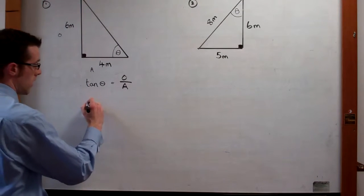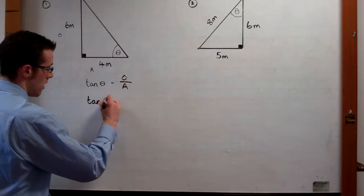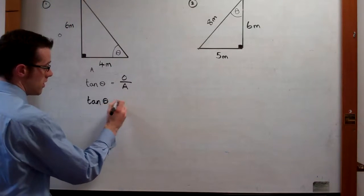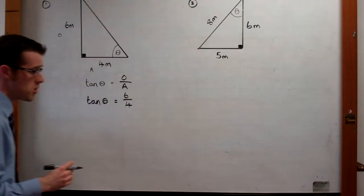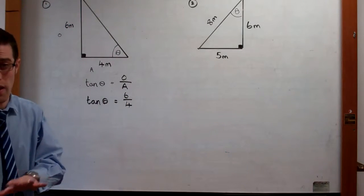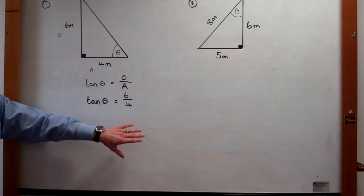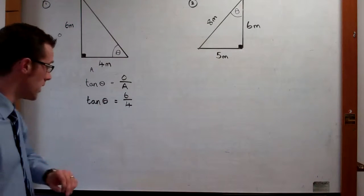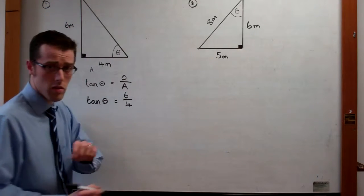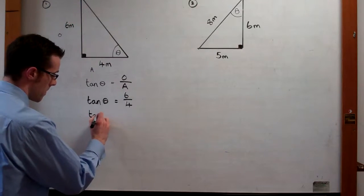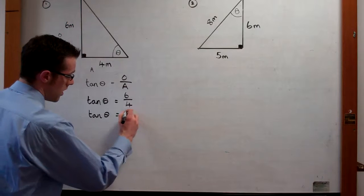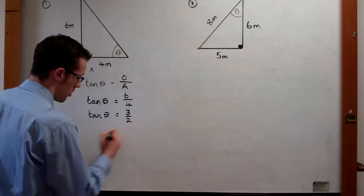So therefore, tan theta is equal to 6 over 4. Now, at this point you can use your calculator straight away, but I want you to reduce down this fraction just for practice and completeness. So we've got tan theta is equal to 3 over 2.